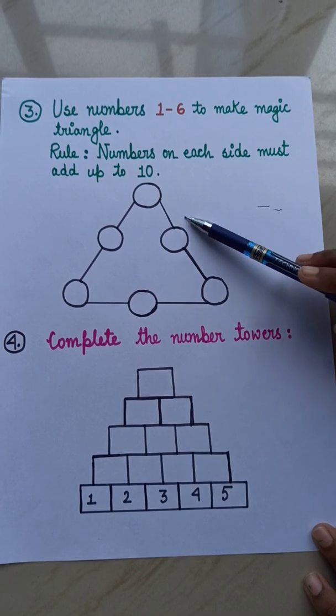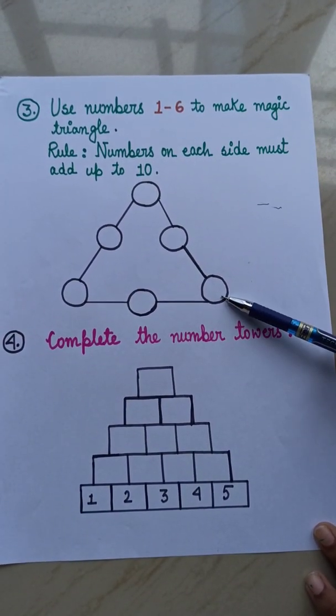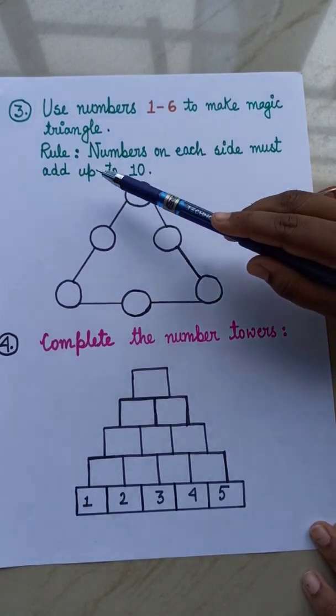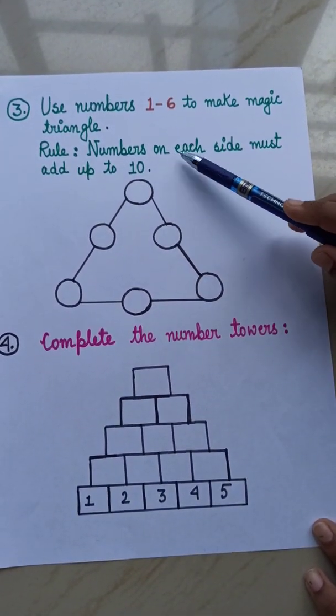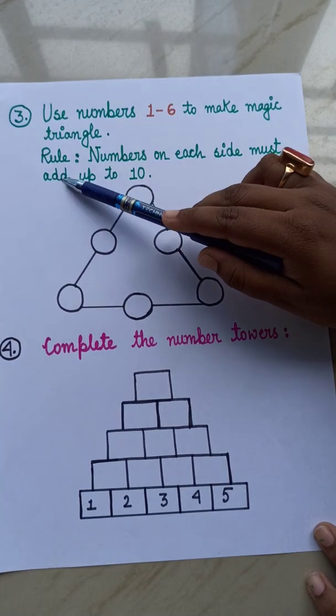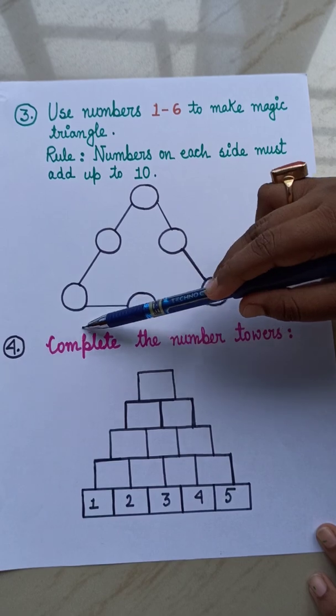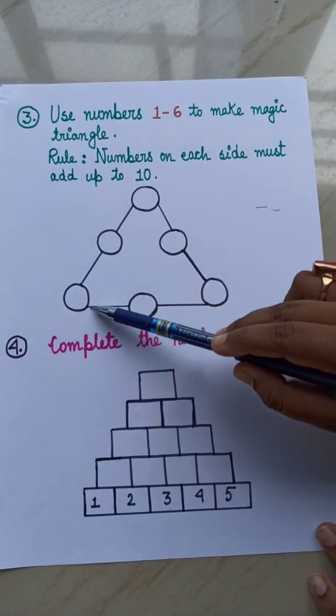This is your magic triangle. You have to fill these magic triangles using number 1 to 6. And the rule is, numbers on each side must add up to 10. That means, each side, suppose this side or this side or this side.